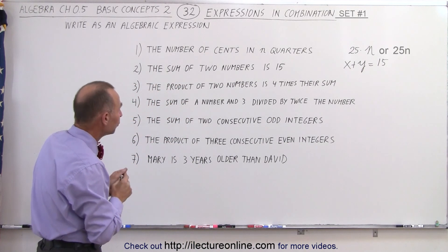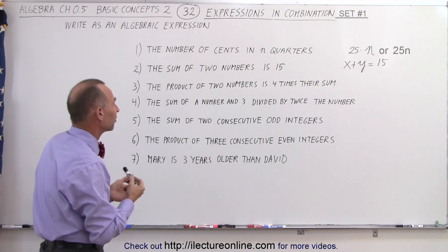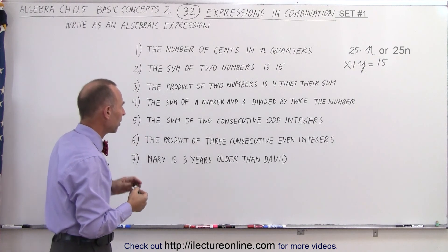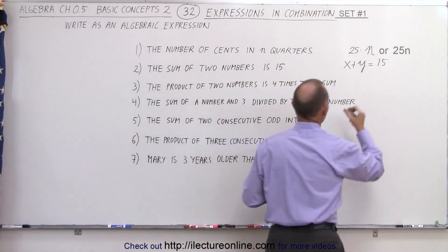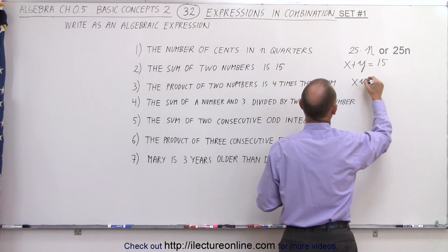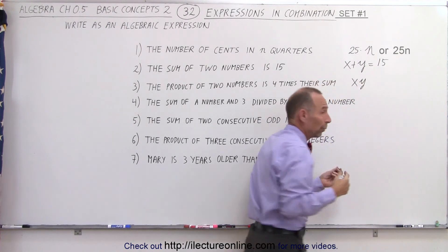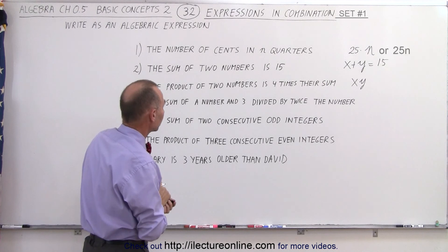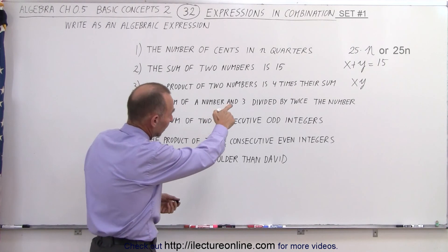The product of two numbers is four times their sum. We have two numbers. Let's write down the product of the two numbers. So we have x times y. These are two numbers we don't know, and we multiply them together. So that's the product of the two numbers. It is equal, because it says it is.